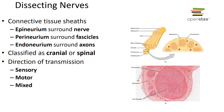The connective tissue sheaths are: the epineurium, which surrounds each nerve; the perineurium, which surrounds a fascicle or bundle of nerves; and the endoneurium, which surrounds the axon itself — so the epi is the outer and endo is the deepest. Nerves can be classified as either cranial or spinal, and based on their direction of transmission as sensory (afferent), motor (efferent), or mixed. We will examine the 12 pairs of cranial nerves as well as spinal nerves.